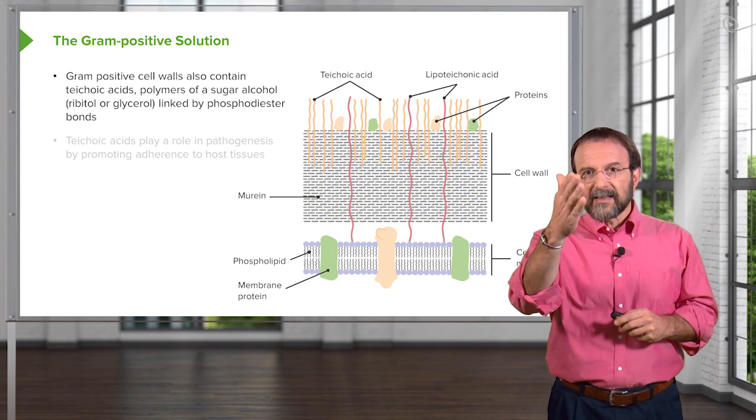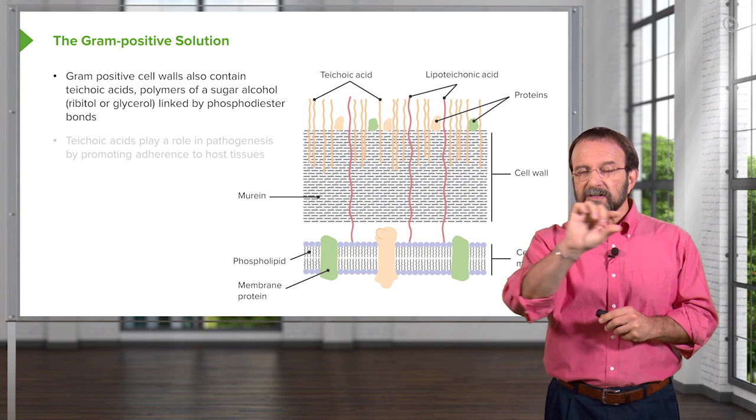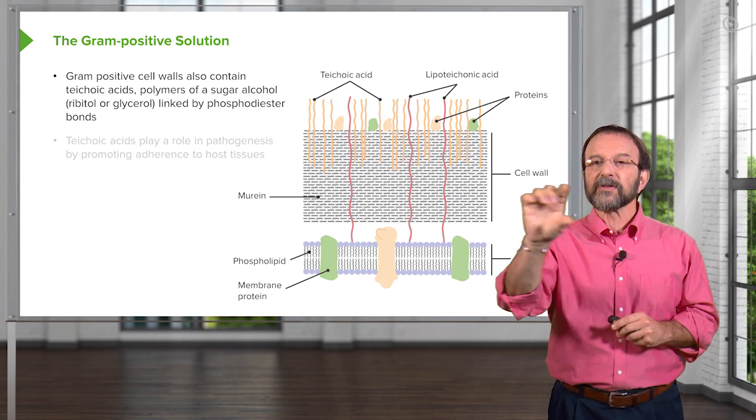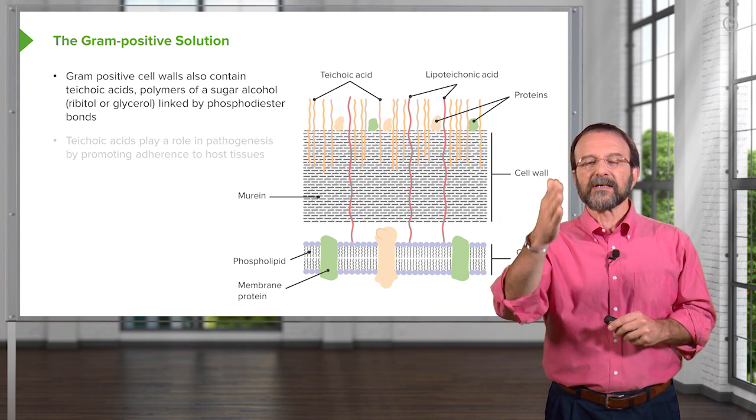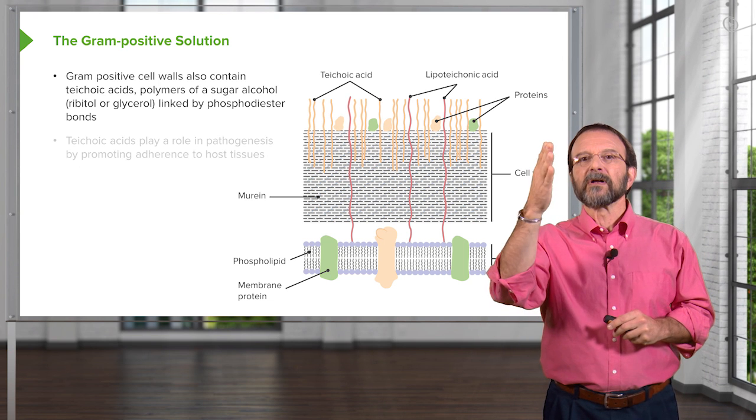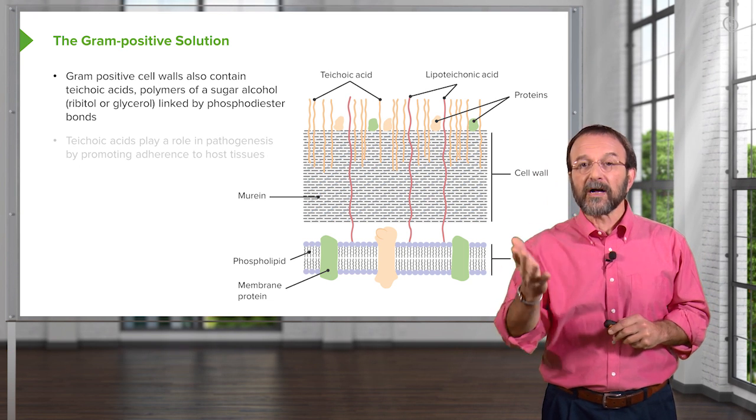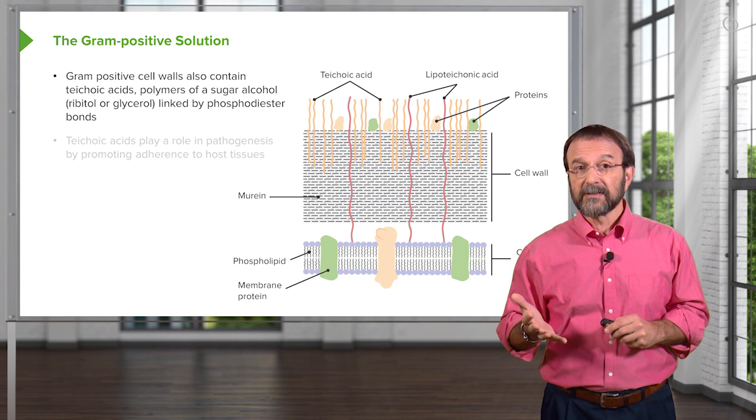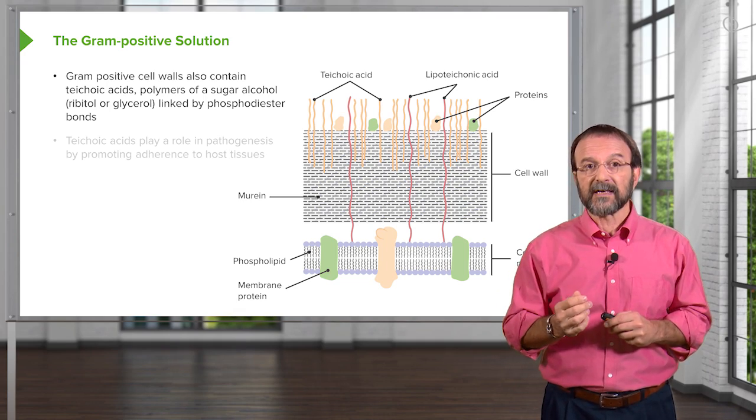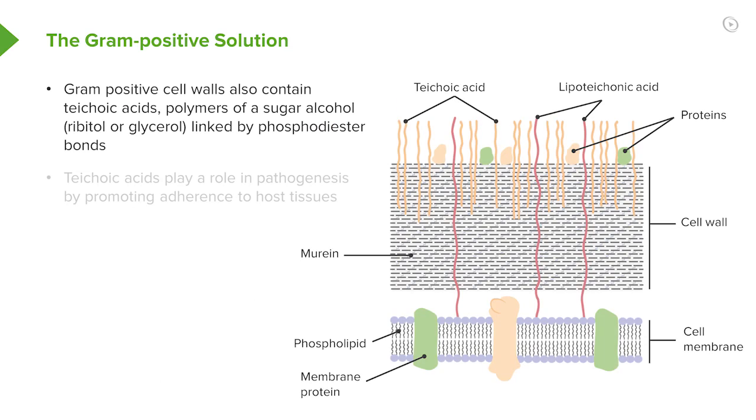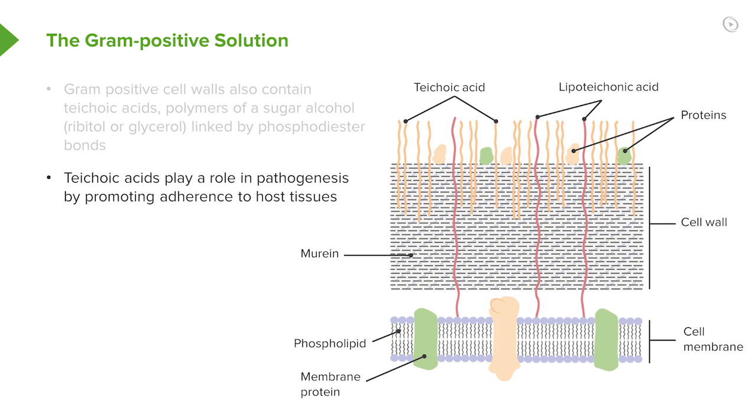Now, remember that this thick layer is sitting over the cell membrane, the murine or the peptidoglycan, what we call the cell wall. Embedded in it are teichoic acids or lipoteichoic acids. These are polymers of a sugar alcohol, either ribitol or glycerol, linked by phosphodiester bonds. And these molecules play a role in pathogenesis. They allow the bacteria to adhere to specific tissues.